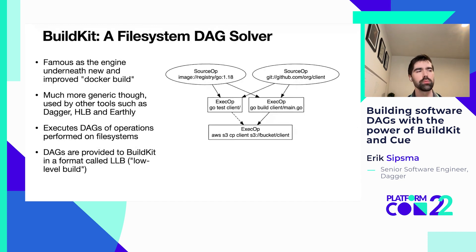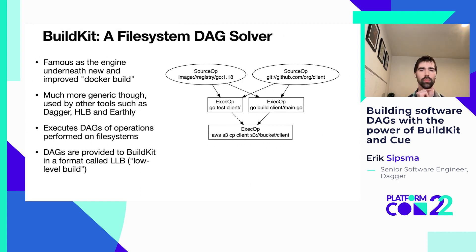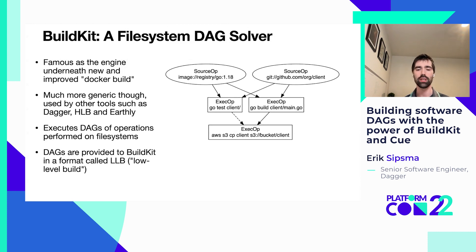I want to start with BuildKit. It's probably most famous as the engine underneath Docker BuildX and a lot of the cool features there, but it's actually totally generic and standalone — it can be used by any tool outside of the Docker context. Examples are Dagger, HLB, and Earthly, among many others. I call it a file system DAG solver, because each vertex in the DAGs you provide to BuildKit are operations performed on one or more file systems, and all of the edges are basically file systems being exchanged between those vertices.